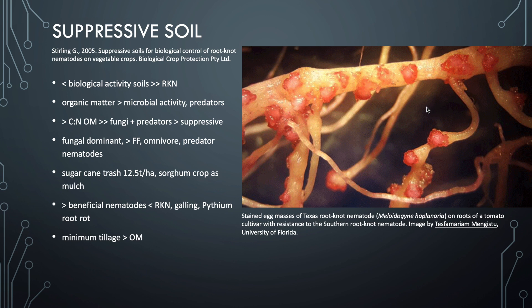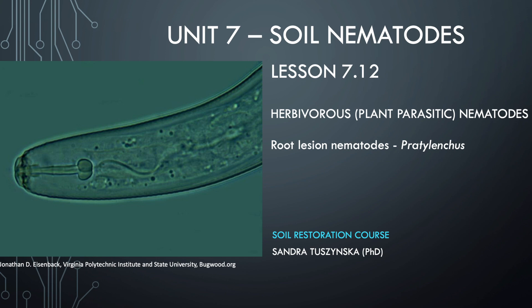The image on the right shows stained egg masses of Texas root-knot nematode, Meloidogyne hapla, on the roots of a tomato cultivar that is actually resistant to the southern root-knot nematode. We have come to the end of Lesson 7.11, and in our next lesson we'll talk about the last of the most economically important herbivorous or plant parasitic nematodes: the root lesion nematode in the genus Pratylenchus.